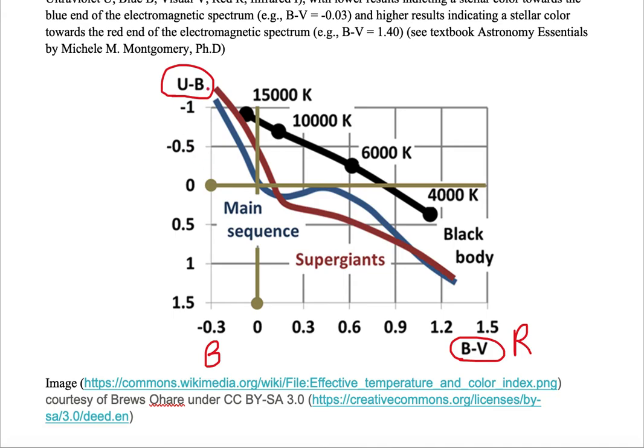Let's look at U and B. If U minus B is more of a negative or a lower number, the object is going to emit more ultraviolet light. If U minus B is a high number like 1.5, then the object is going to appear more blue than ultraviolet.